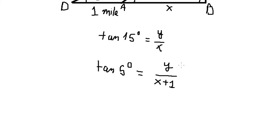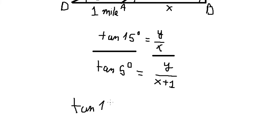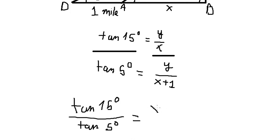Now we want to find Y. But first we need to find the value of S. So we divide the two equations. We simplify and get tan(15°) over tan(5°) equals S plus 1 over S.